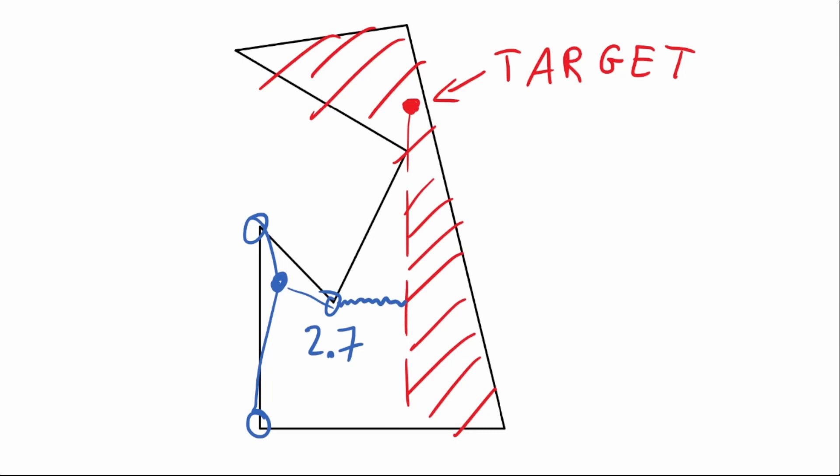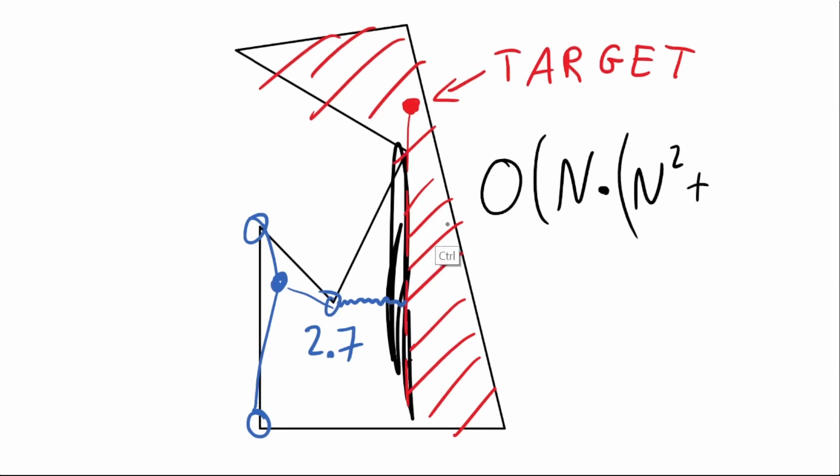So our time complexity changes a little bit, we still have O of n for the interesting points. And for each of them, you will go n squared, needed for Dijkstra, you will consider a path to every other interesting point, and then you will check intersections. Plus, separately, for every such point, once you already know the distance, here it's 2.7, you will consider a segment perpendicular to some existing segment from this red visible area, visible from the target. And there are now also n such possible segments here.